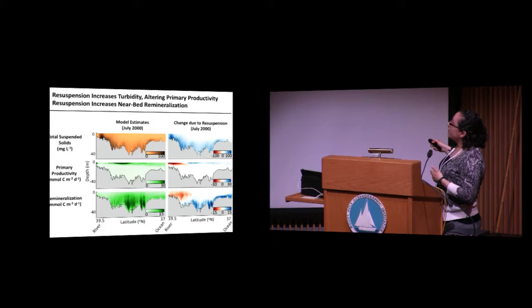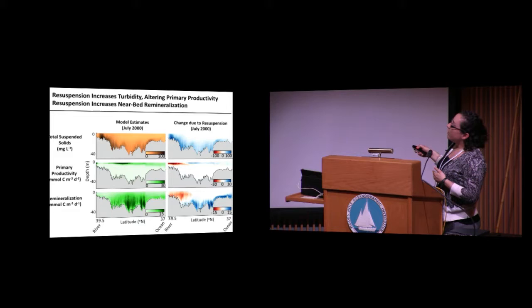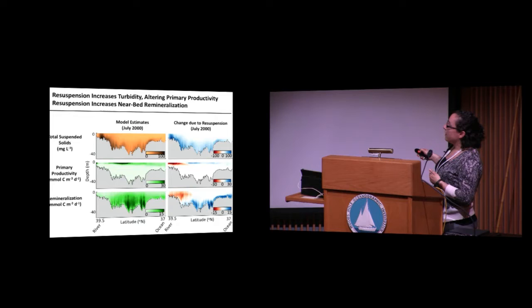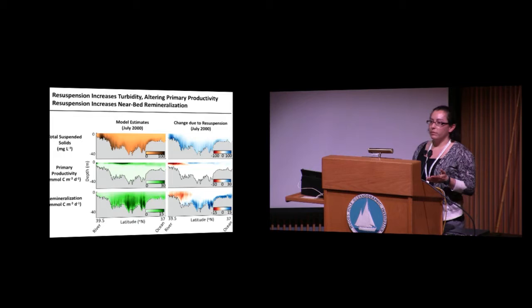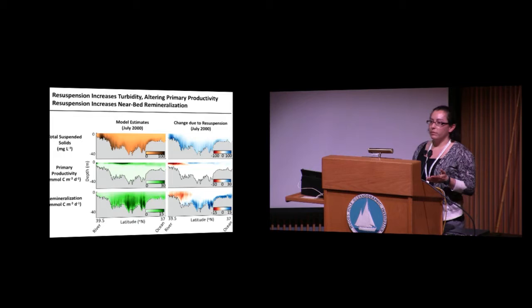The blue colors indicate an increase, so you can see we're getting an increase near the bed of total suspended solids and the reinforcement of the estuarine turbidity maximum — this makes sense. This increase in turbidity is causing an increase in light attenuation, which is causing a decrease in primary productivity in the upper bay, causing more nutrients to be shifted downstream and increasing primary productivity there. This shift in the production of organic matter, as well as resuspension of organic matter near the seabed, is causing a similar shift in remineralization rates. Overall, this modeling approach is allowing us to look at spatial and temporal variability in these processes, and it might be a way to approach some of the lateral flux issues we've been talking about today. Thank you.